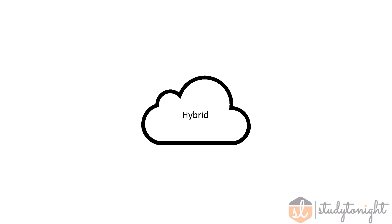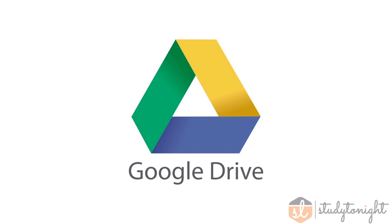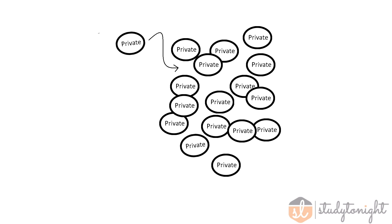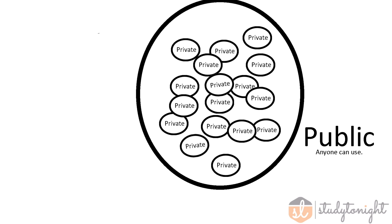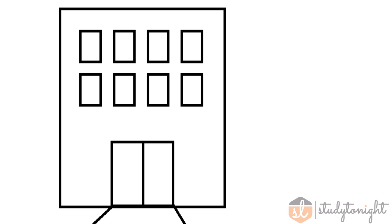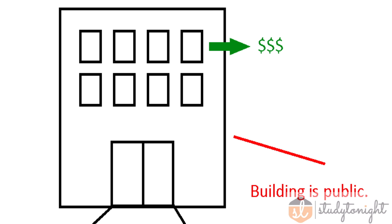A hybrid cloud is like a mix and mash of public and private clouds. I like to use the example of Google Drive for hybrid clouds — you have your own little private cloud and a massive collection of private clouds that come together to form a public cloud that anyone can use. Think of it as like a hotel, where you can buy a room as you need in a building that's pretty much open to the general public.